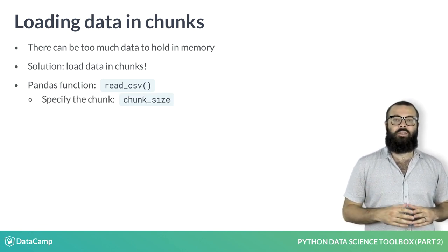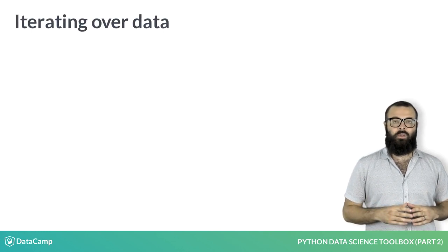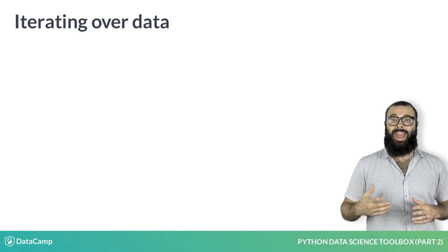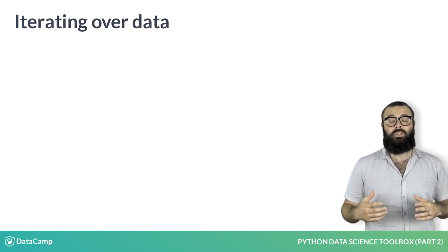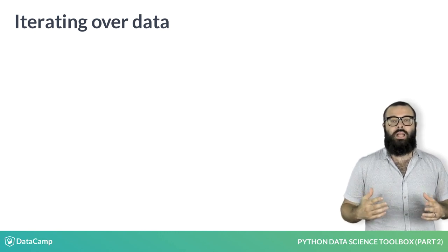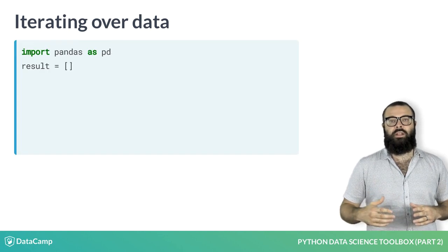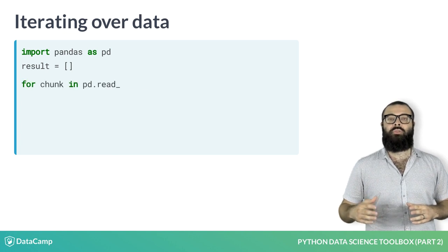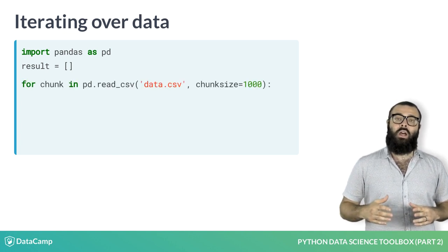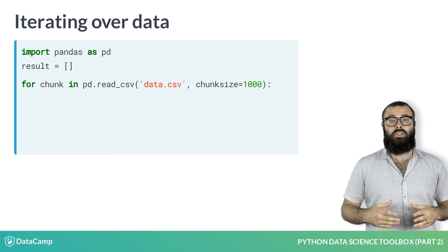As with much of what we do in data science, this is best illustrated by an example. Let's say that we have a CSV with a column called X, containing numbers, and I want to compute the sum of all the numbers in that column. However, the file is just too large to store in memory. We first import pandas, and then initialize an empty list result to hold the result of each iteration. We then use the read_csv function, utilizing the argument chunk_size, setting it to the size of the chunks I want to read in. In this example, we use a chunk size of a thousand.